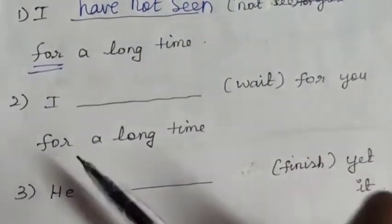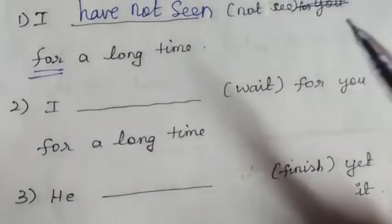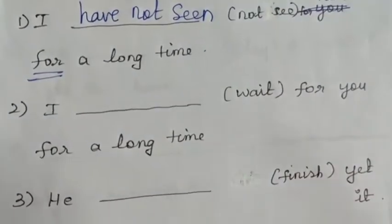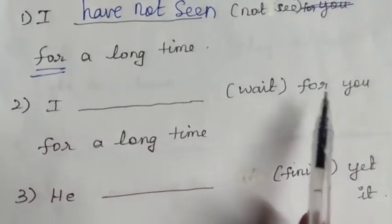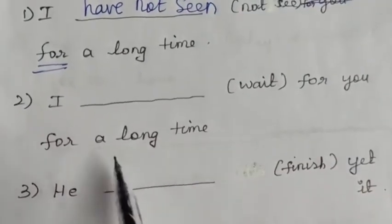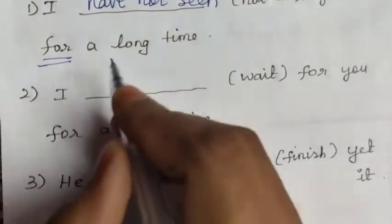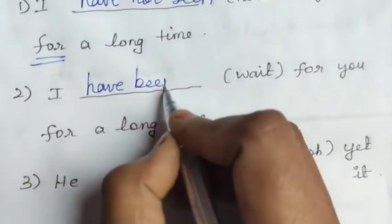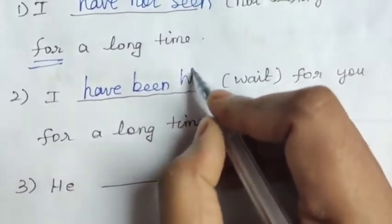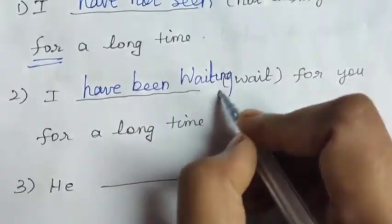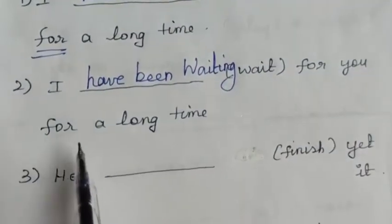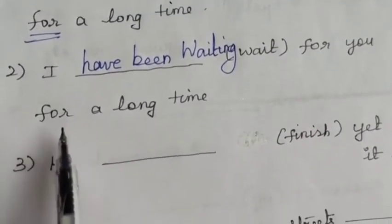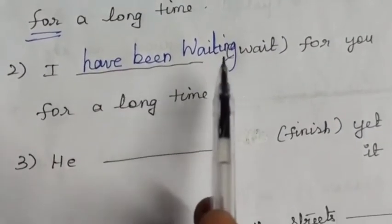But with regular verbs like 'wait', we do use -ing. 'I have been waiting for you for a long time.' Here 'wait' can take -ing, and 'for' is the clue word indicating period of time, so we use present perfect continuous tense: 'I have been waiting for you for a long time.'